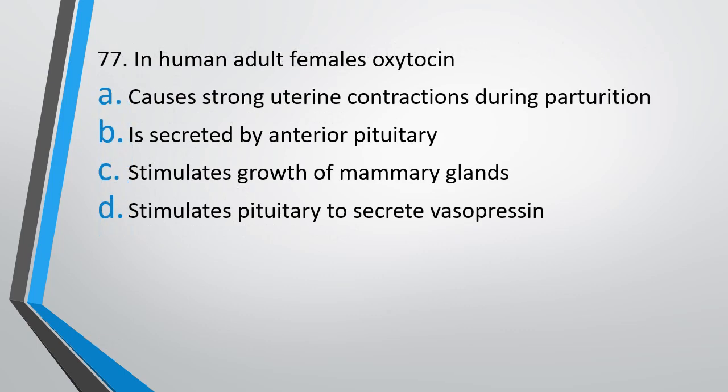Question number 77. In human adult female, oxytocin: causes strong uterine contraction during parturition, is secreted by anterior pituitary, stimulates growth of mammary glands, or stimulates pituitary to secrete vasopressin. In adult female, oxytocin — the correct answer is option A, causes strong uterine contraction during parturition.